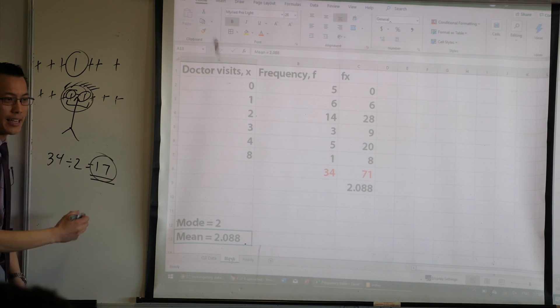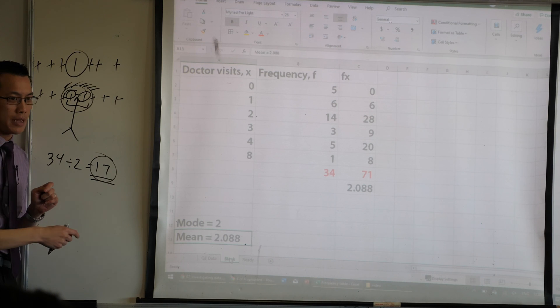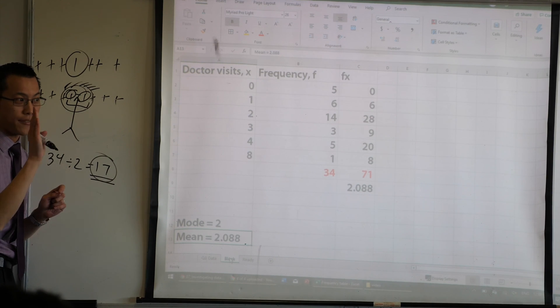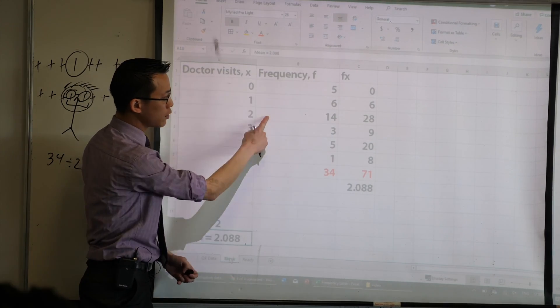So in this case, I got 17. So my median should be the average between which two people? 17 and? 18. 18. Person 17? Person 18. Now have a look at this.